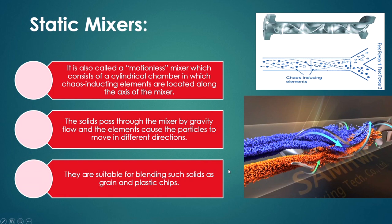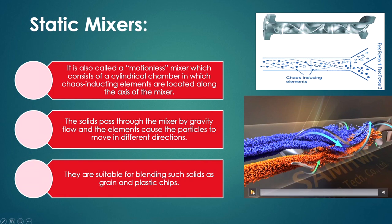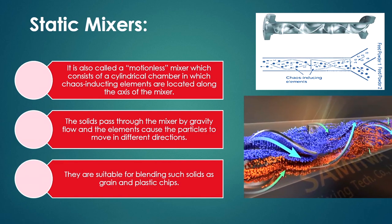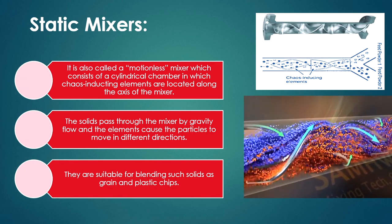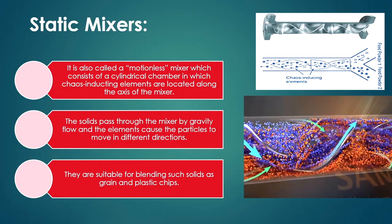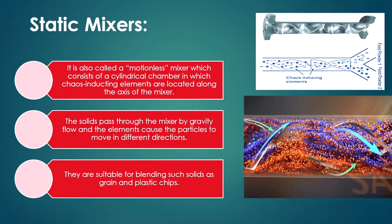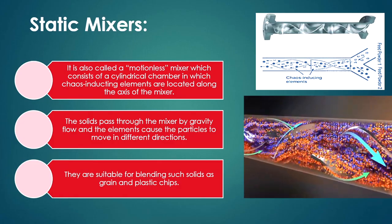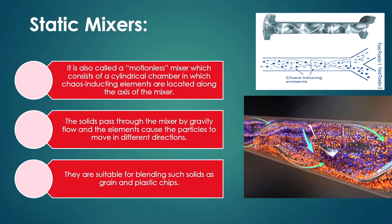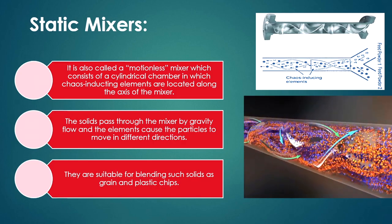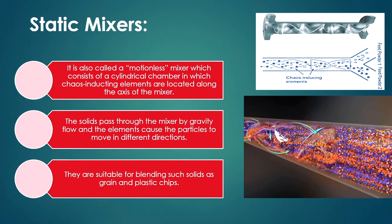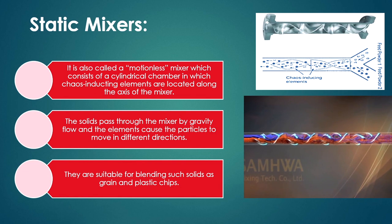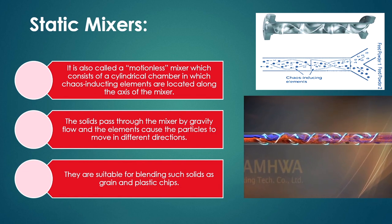The static mixer, also called a motionless mixer, consists of a cylindrical chamber with chaos-inducing elements located along the axis of the mixer. Solids pass through by gravity flow, and the elements cause particles to move in different directions. These are suitable for blending solids such as grain and plastic chips.